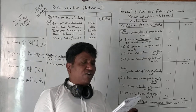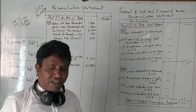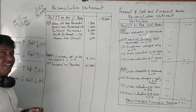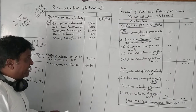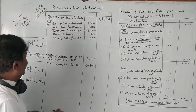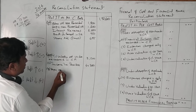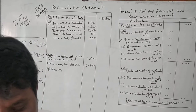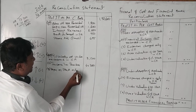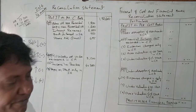Depreciation of stock charged in financial books — it is very clearly given that this depreciation is charged only in financial accounting. Any expenses charged only in financial accounting should be deducted. So depreciation on stock, only in FA: 6,750 rupees to be deducted.